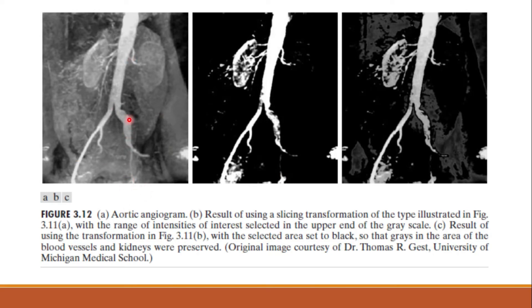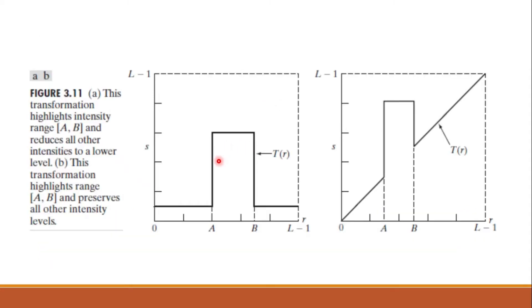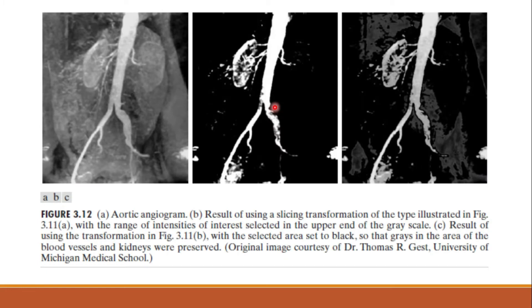This figure shows the application of gray level slicing using an aortic angiogram. If you apply the first transformation function — highlighting a specific range of values and keeping all other values near to 0 or black — the output is a binary image, highlighting only some specific range of intensities. For this figure, the result is that the blood vessels and part of the kidneys appear white while all other intensities are black. This type of enhancement produces a binary image and is useful for studying the shape of flow of blood to detect blockages in blood vessels, as you can see here.